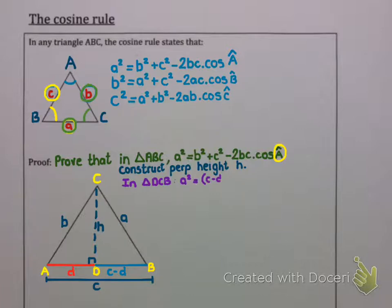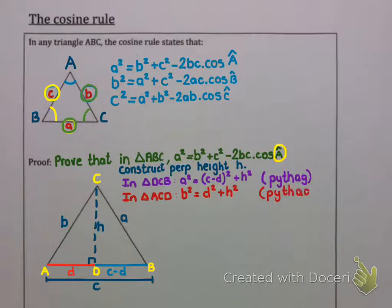Now if you look at triangle DCB, which is the triangle on the right, Pythagoras' theorem will tell you the hypotenuse, which is A squared, is the other two sides squared added together. So A squared equals C minus d squared plus h squared. But if you look at the triangle on the left, which is ACD, Pythagoras will tell you B squared equals d squared plus h squared.